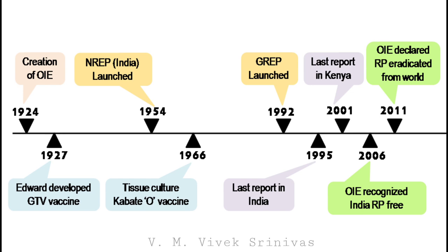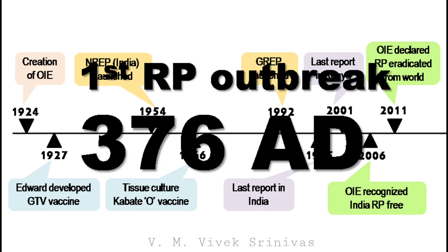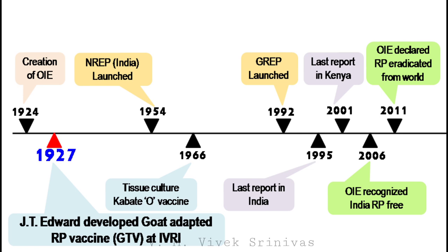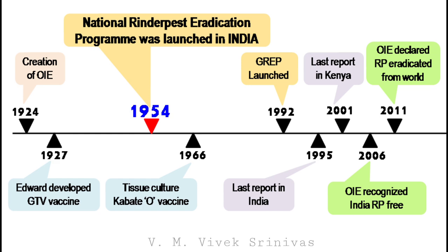The first recorded outbreak was in 376 A.D. in Europe. In 1924, the OIE was created to coordinate the control of Rinderpest and other animal diseases. In 1927, the first breakthrough in Rinderpest vaccine development occurred — Edward developed a goat-adapted vaccine against Rinderpest at IVRI. In 1954, the National Rinderpest Eradication Program was launched in India, introducing systematic mass vaccination of cattle and buffalo.